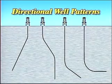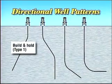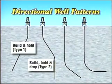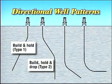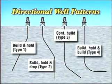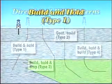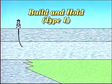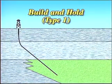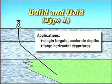In laying out the well trajectory, we may start by looking at four general patterns: the build and hold, or type 1 pattern; the build, hold, and drop, S-curve, or type 2 pattern; the continuous build, or type 3 pattern; and the build, hold, and hold pattern. The build and hold pattern employs a shallow initial deflection from vertical and a straight angle approach to the target. It's good mainly for reaching single targets at moderate depths and sometimes for drilling deeper wells with large horizontal departures.